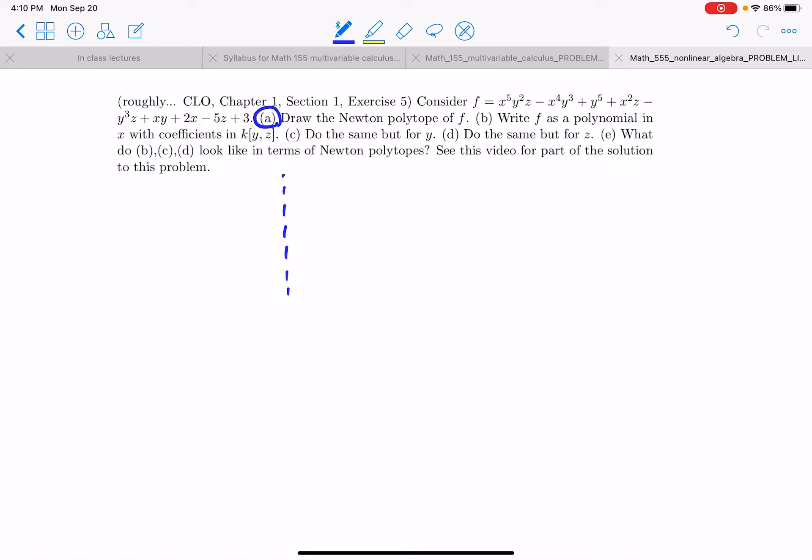Okay so the Newton polytope will be in three-dimensional space because we have three variables. This monomial is 0,5,2,1. So there's that one. Okay the next monomial is 4,3,0. The next monomial is 0,5,0. Okay that was that one. Now we have 2,0,1.